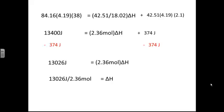So 13,026 joules divided by 2.36 moles gives us 5,519.5 joules per mole. That's our delta H value. If we round to three sig figs and convert to kilojoules, which we need for the next step, we get 5.52 kilojoules per mole for the heat of fusion of ice.